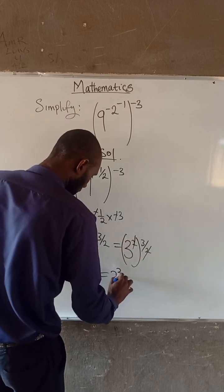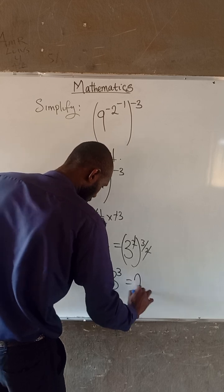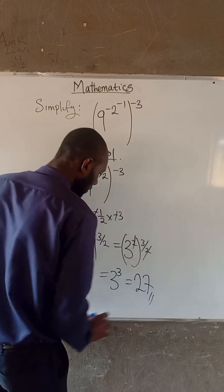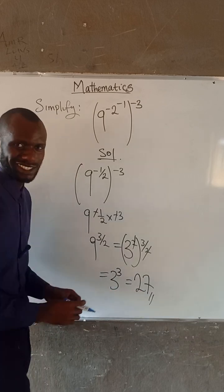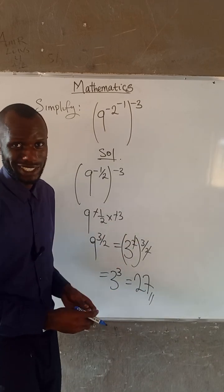So we have that 3 to the power of 3 is equal to 27. So this expression here is equal to 27. Very short and quick.